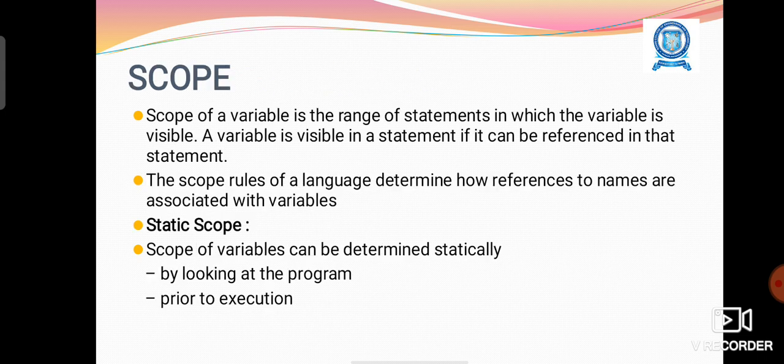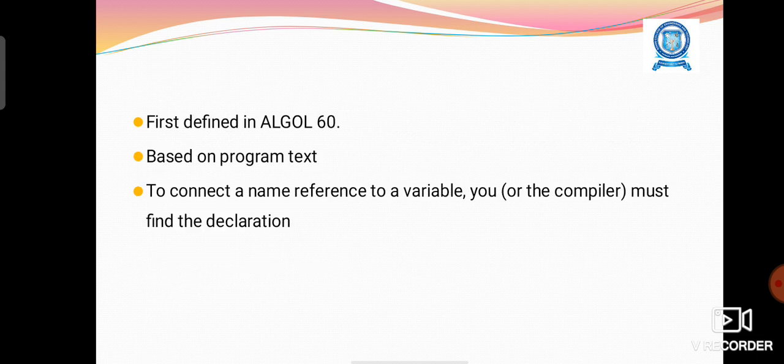Scope of a variable is the range of statements in which the variable is visible. A variable is visible in a statement if it can be referenced in that statement. Static scope of variables can be determined statically by looking at the program prior to execution. It was first defined in ALGOL 60.